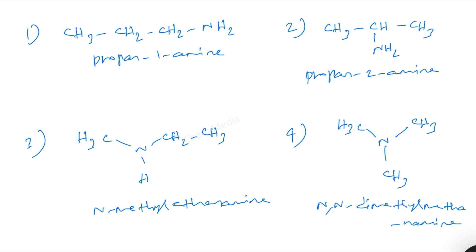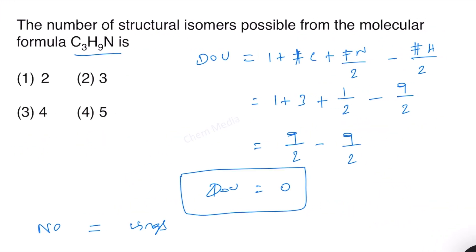And therefore, 4 structural isomers are possible. That means option 3 is correct.